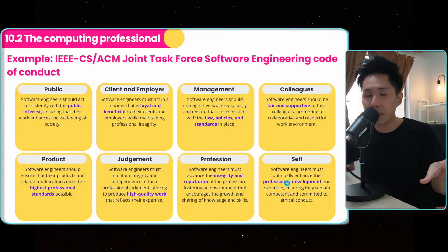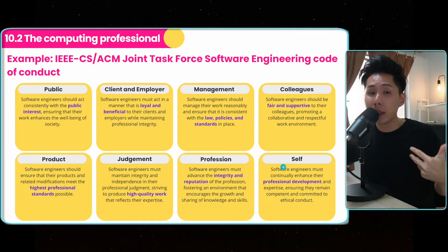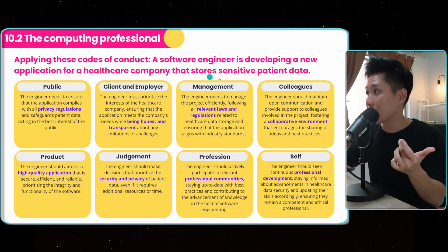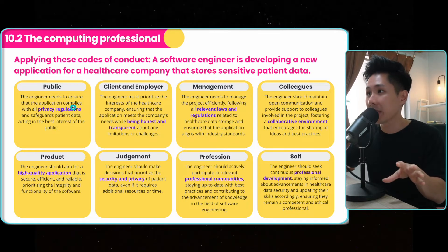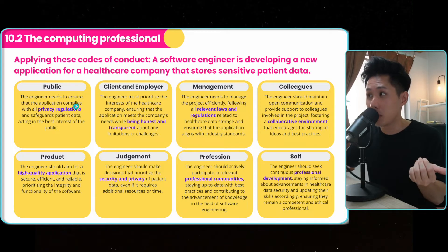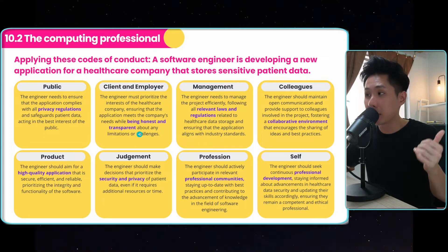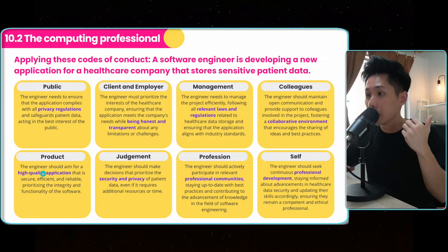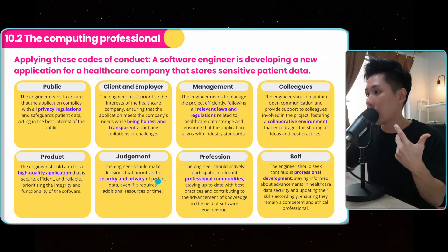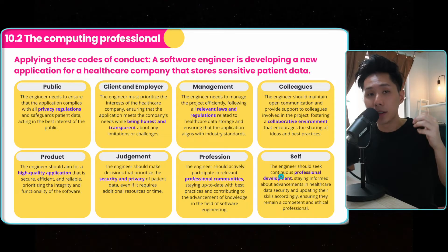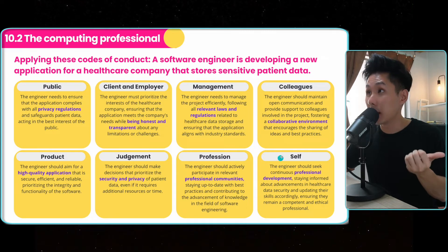For some of you, you might think this is common sense. Yet having this conduct in mind will really make the world a better place. An example: a software engineer developing an application for a healthcare company that stores sensitive patient data, how he or she can apply this code of conduct. For the public, it has to ensure the app abides by privacy regulations — you cannot just share data with other people. Being transparent and honest about the application; if something goes wrong, you have to say it. Management: abide by all development laws and regulations. Collaborate with your colleagues. Produce a high quality application instead of half-done work. Ensure security and privacy of patient data. Ensure that you also have a professional community, and the software engineer should seek professional development to make the app better.